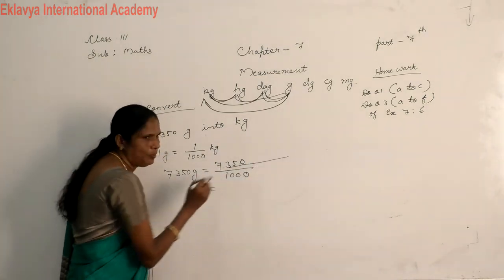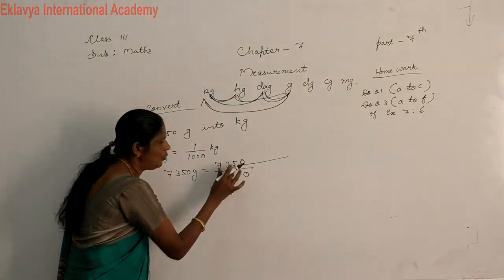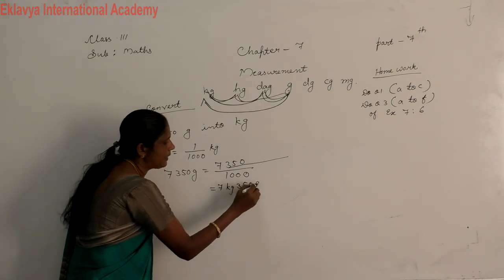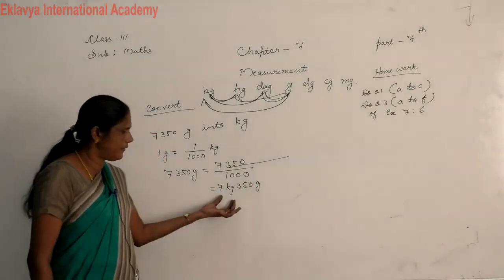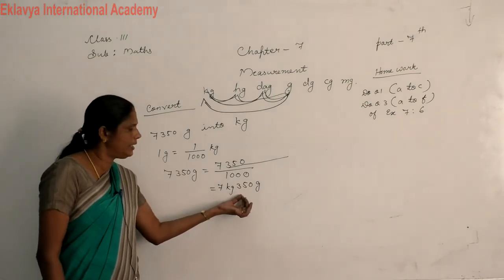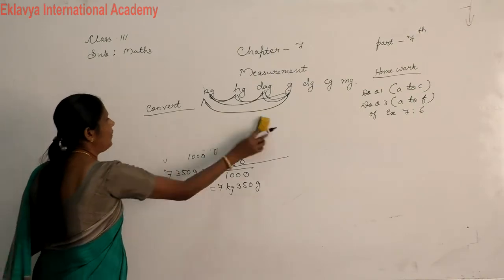This 3 digits you remove. Then 7 kg, the remaining 350 gram. This is our gram. Understand you? 7 kg, 350 gram. Now, one more example.